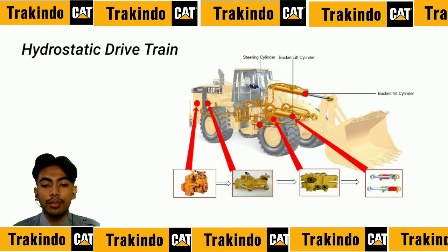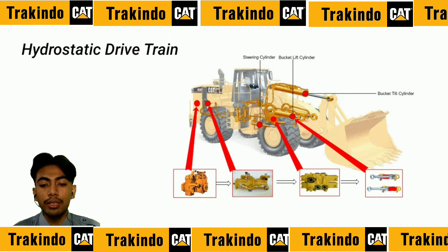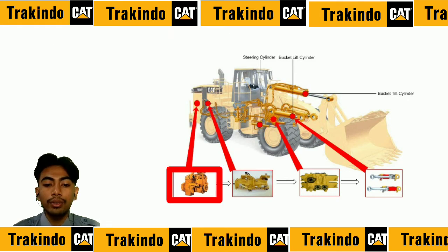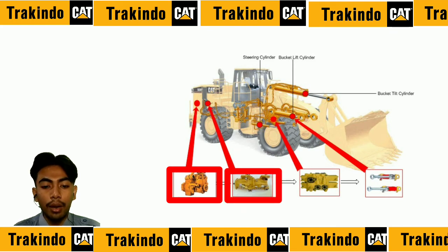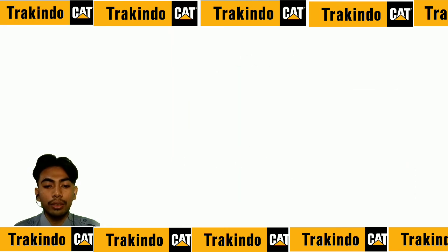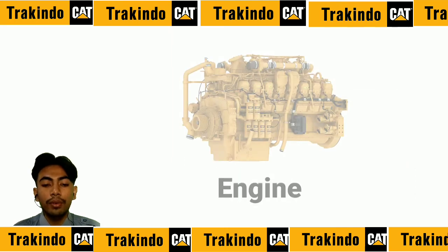The hydraulic system consists of a number of components that work together to produce work. The hydraulic system of the wheel loader is used to control the bucket. The series of components that work together are: first — engine; second — hydraulic pump; third — control valve; and fourth — hydraulic cylinder.